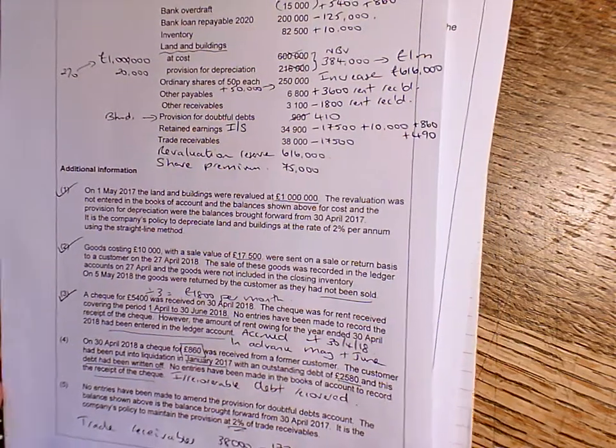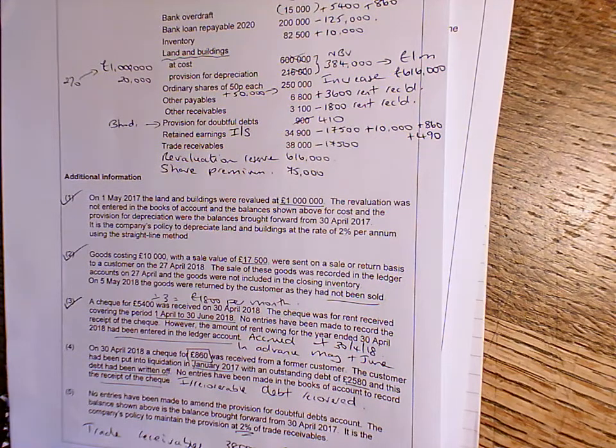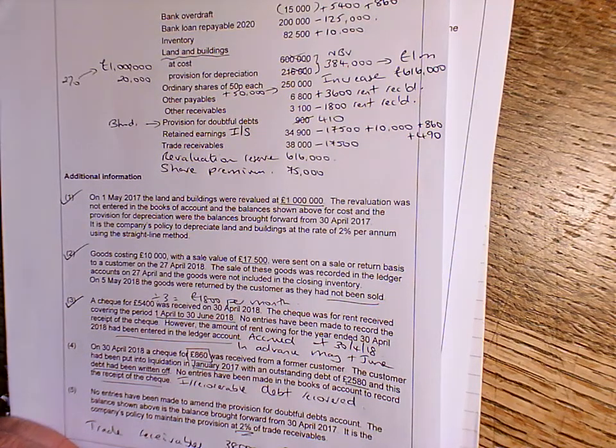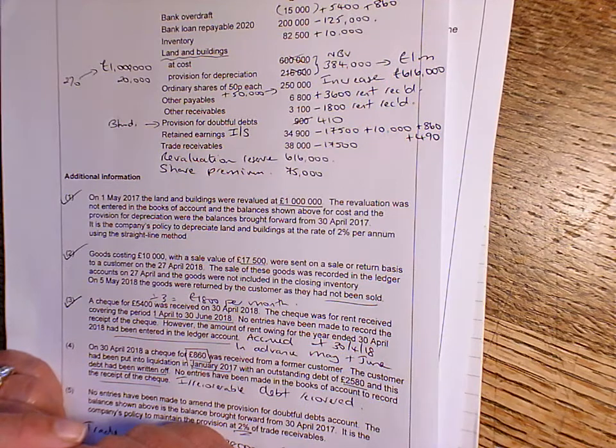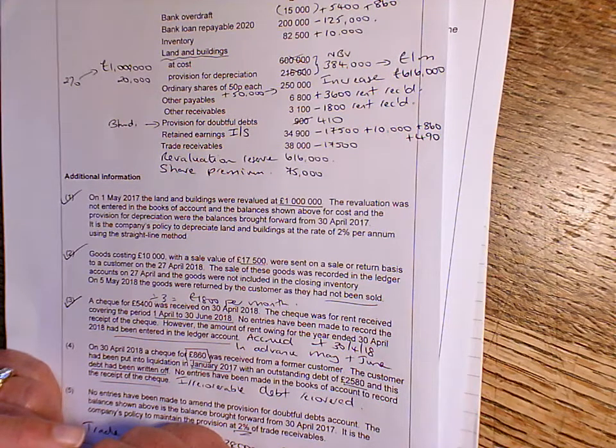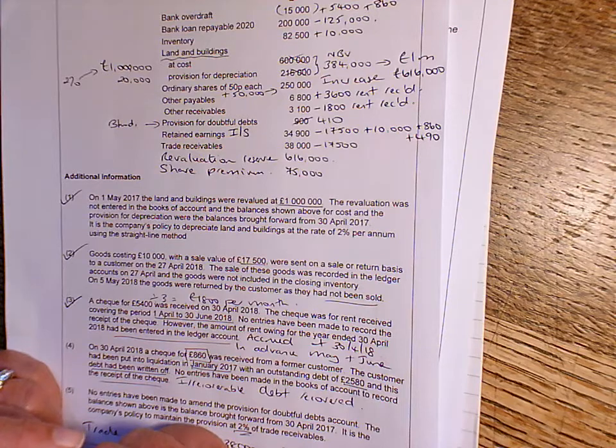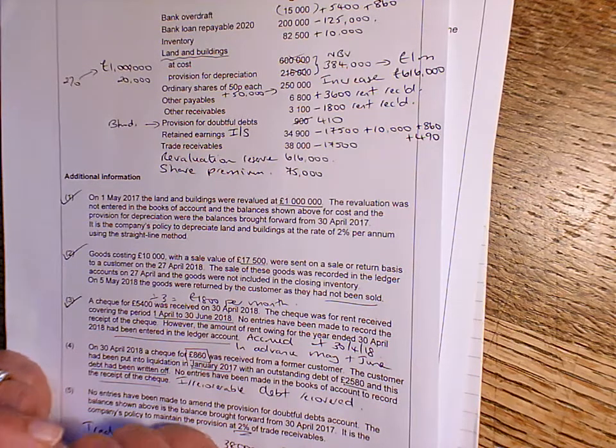So you've got everything you need there to get going with that. I've uploaded onto Google Classroom a pro forma of the statement of financial position that you can use, perhaps just fill in the blanks. But have a go yourself at working through step by step and see if you can come up with a statement of financial position that adds up. If all else fails, I've got an Excel file which shows you with workings what the final statement of financial position should look like. Enjoy!